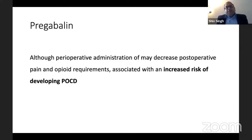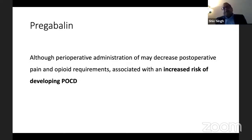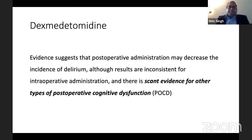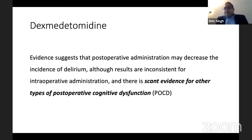Pregabalin, used as part of enhanced recovery, has been shown to decrease postoperative pain, but it is associated with increased risk of developing POCD — so pregabalin is not a good idea in the elderly. Dexmedetomidine can reduce delirium in the post-operative period, but administering dexmedetomidine intraoperatively does not reduce the risk of a patient developing post-operative cognitive dysfunction — so again, it has no role.